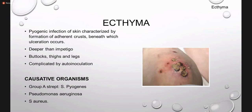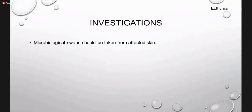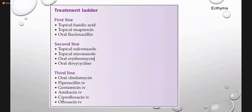The second common infection is ecthyma — an infection with formation of an adherent crust beneath which ulceration occurs. The organisms are the same, but this form is deeper than impetigo. Sites are mostly buttocks, thighs, and legs. It can be complicated by auto-inoculation, as the organism can spread from one part of the body to another due to its contagious nature. The mainstay of investigation in all bacterial infections is a microbiological swab from the affected area. For localized infection, topical antibiotics are used; for severe infection, oral antibiotics.